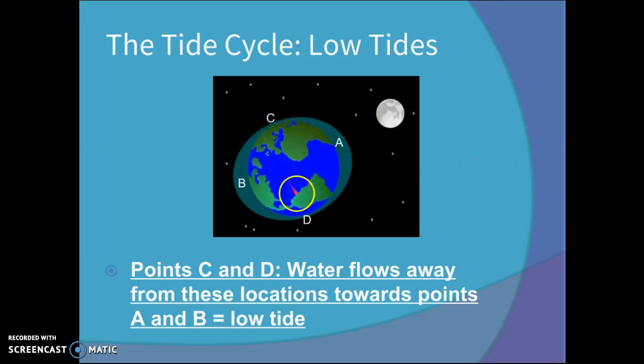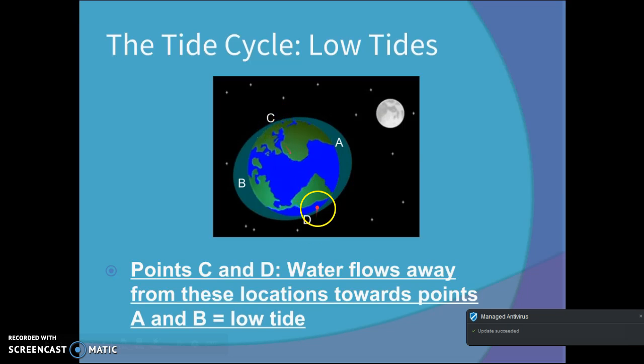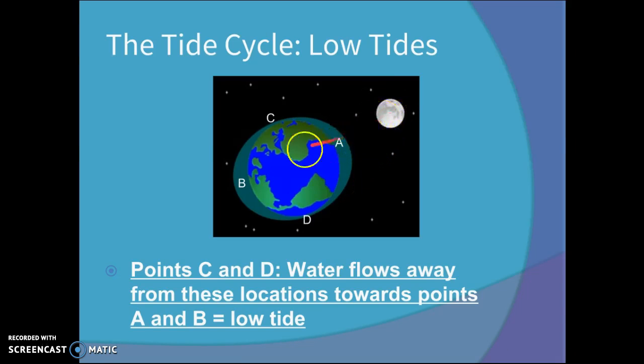Points C and D experience low tide. Water flows away from these locations towards points A and B. So you end up getting a low tide here, a low tide here. And notice these are both at right angles to the Moon, as opposed to directly in line with the Moon.